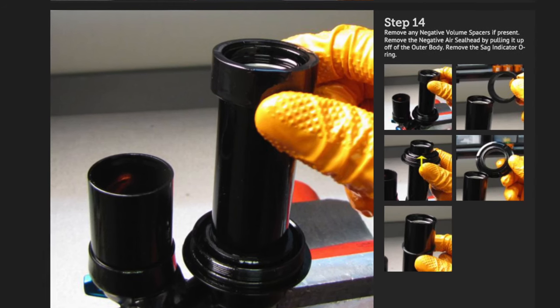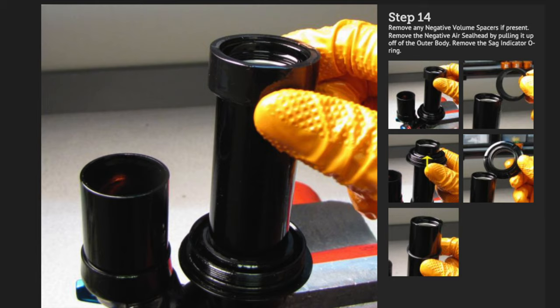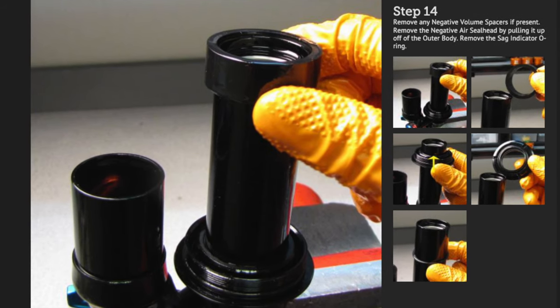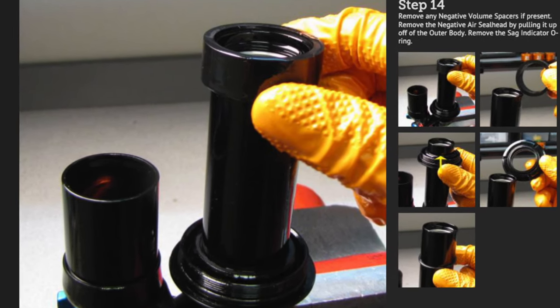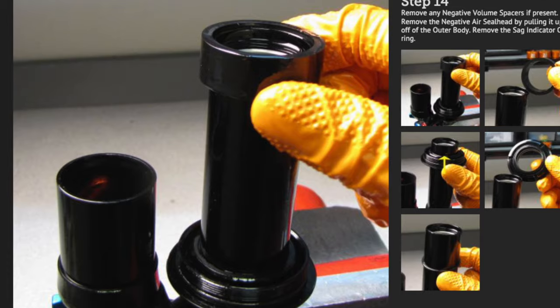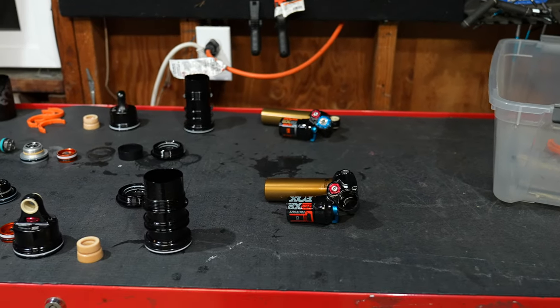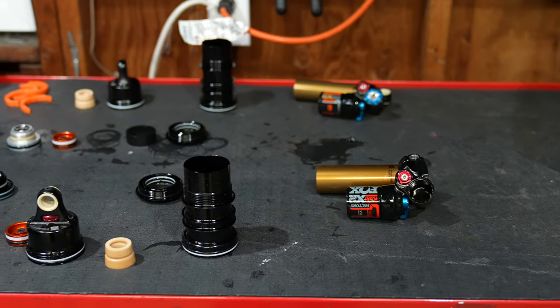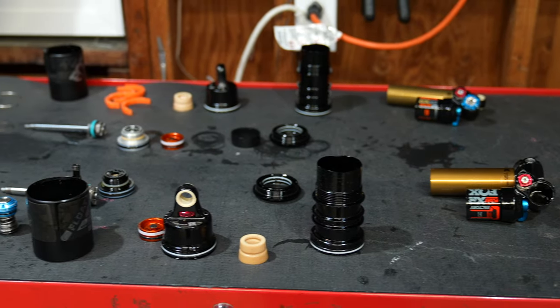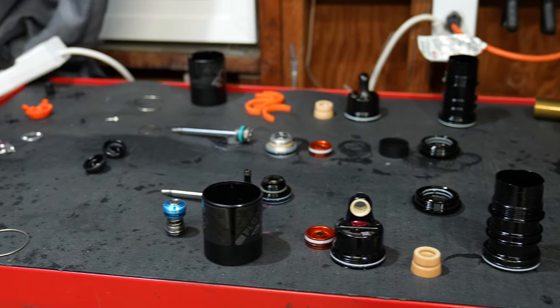Now staring me in the face of my own three videos, and the Fox instructions is this FOMO ring. It's a negative air token. And let me tell you, it makes the shock ride completely different. So all we gotta do is take it apart, or take it out of the shock, and see if it rides like the old, better, older Fox Float X2.